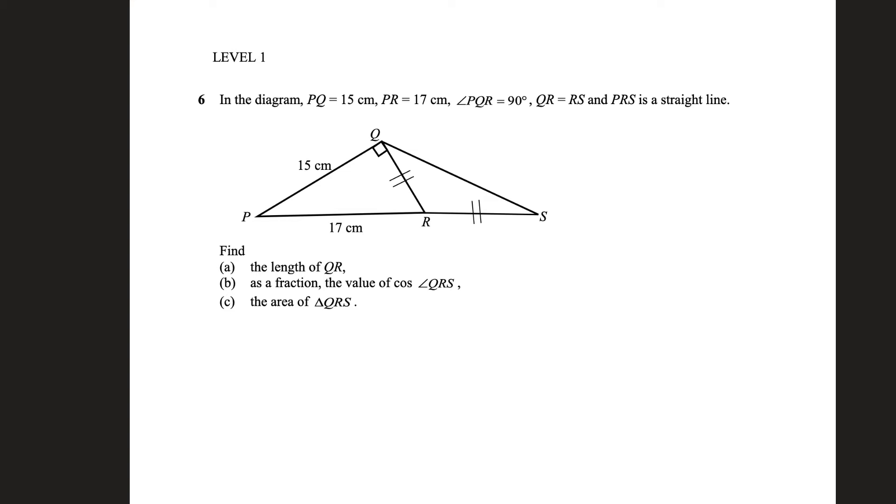Alright, question 6. In the diagram, PQ is 15 cm, PR is 17 cm, and angle PQR is 90 degrees. QR and RS are equal, they very kindly already noted it out for us, and PRS is a straight line, so that means it is 180 degrees.